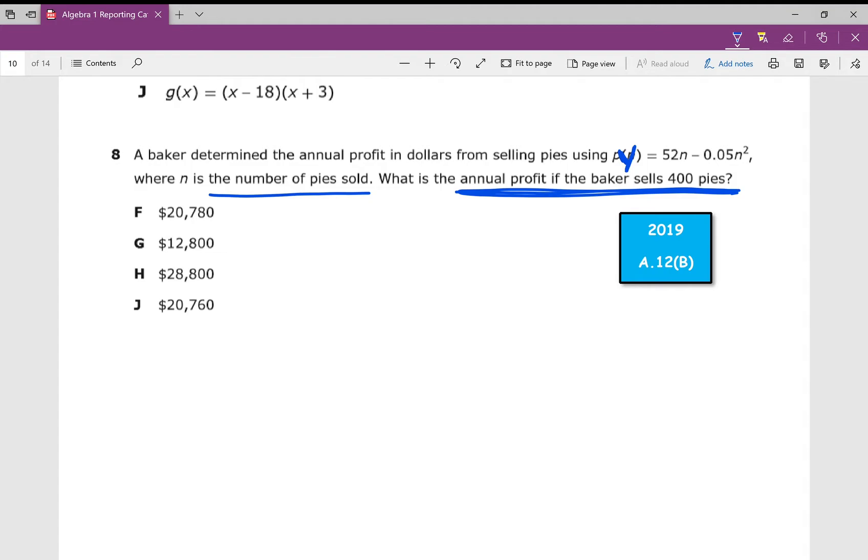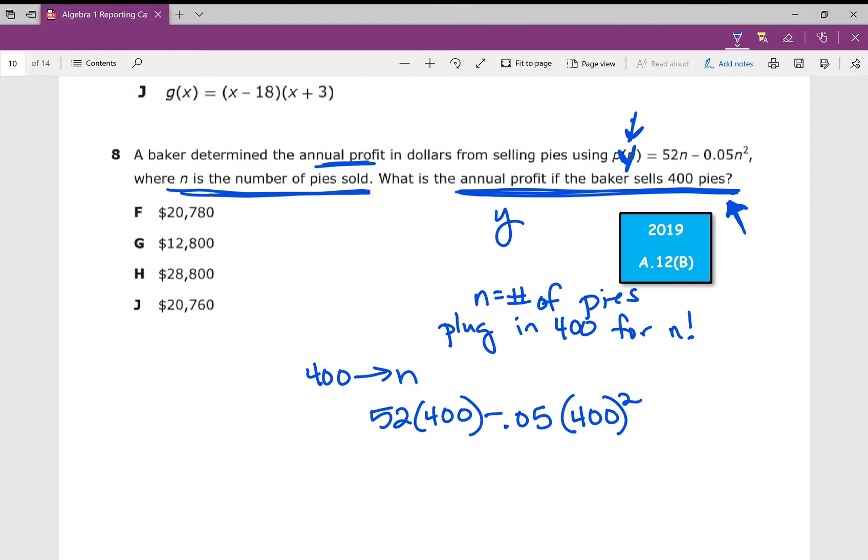What is the annual profit? A baker determined the annual profit. Well, that means y is annual profit. What is y if the baker sells 400 pies? What is y when n is 400? If n equals the number of pies, which it tells us right here, plug in 400 for n. 52 times 400 minus 0.05 times 400 squared. You can always store in 400 for n, or you could store it in for x and just plug it in that way. But if you don't want to store in values for the variable, make sure that it looks like this: times 400 squared. And what do you get? You get G.